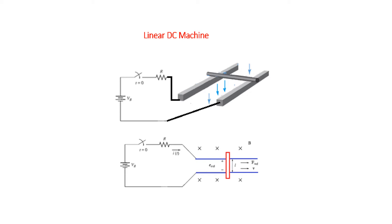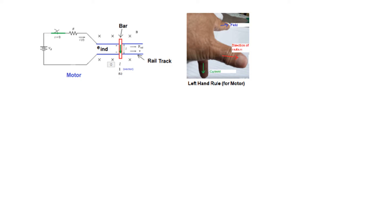Instead of using a conventional rotating motor and generator, I'll explain through what is called a linear DC motor. These are the two rails, and we have a rolling bar placed on them, connected to a battery through a resistor and a switch. This can be represented through a circuit diagram where the magnetic flux lines go from north to south — in this case the magnetic flux is going into the page.